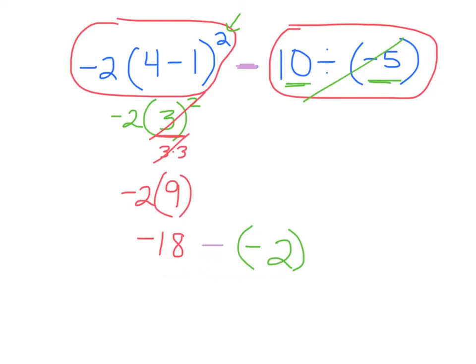My last step is I just need to solve this. Now I really don't like subtraction, so whenever I see subtraction I'm going to turn it to add the opposite. So I'm going to keep my first number the same, negative 18. I'm going to change my subtraction to addition, and then the opposite of negative 2 is positive 2. I'm almost done. Now I'm using my adding rules.